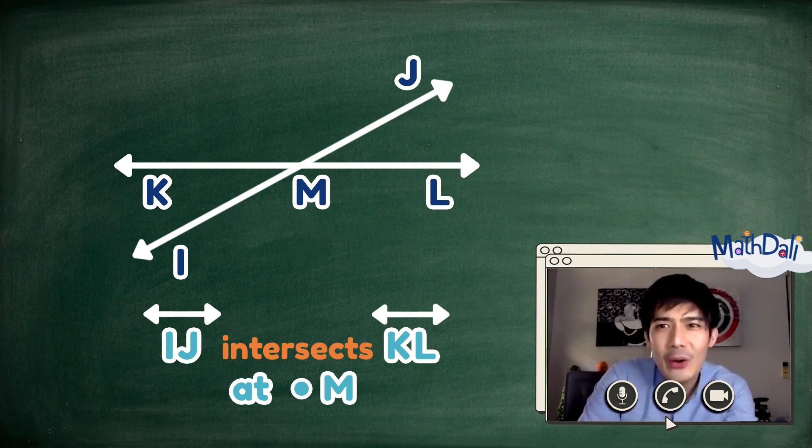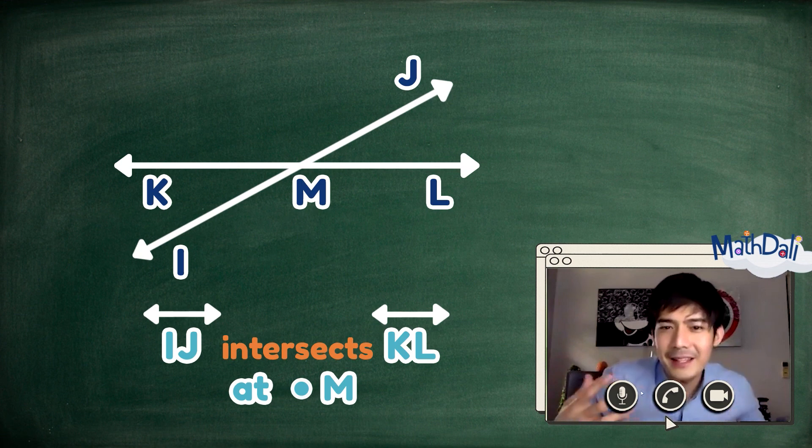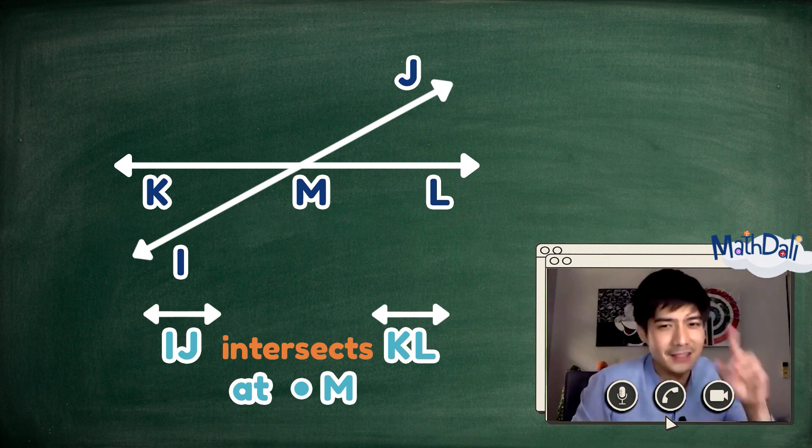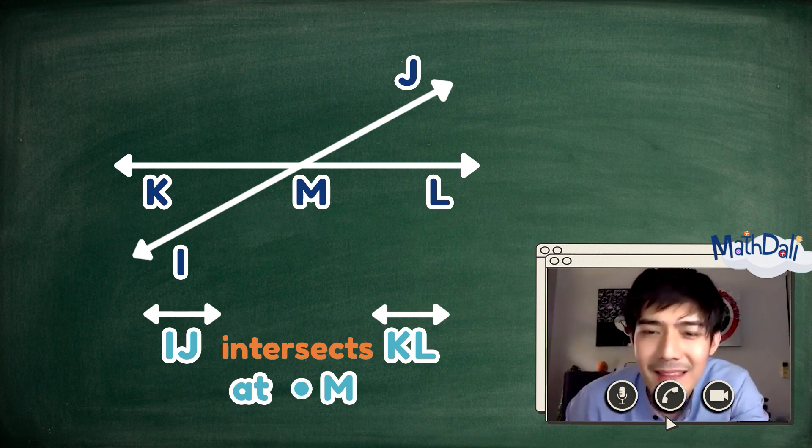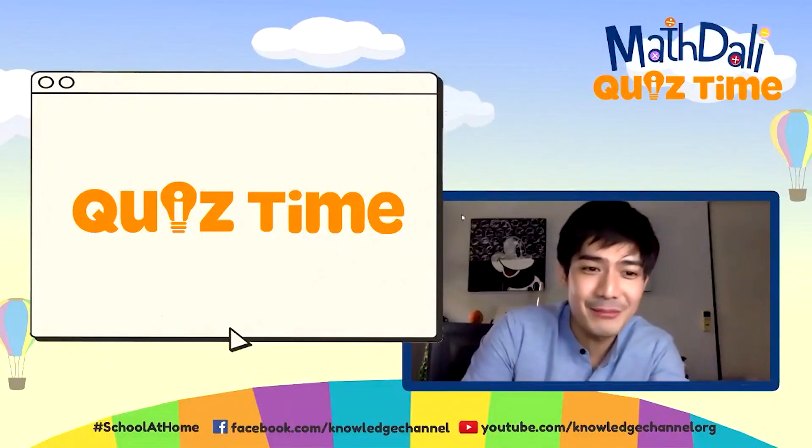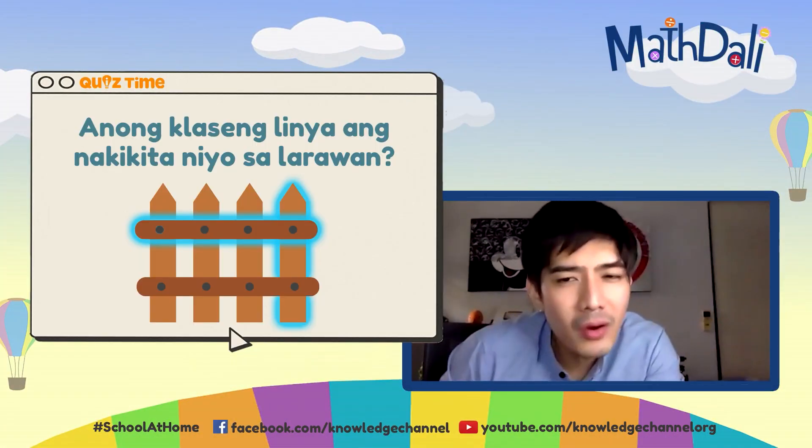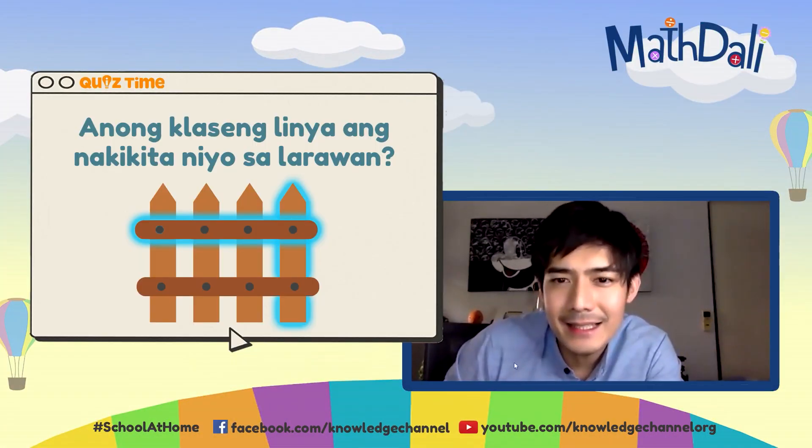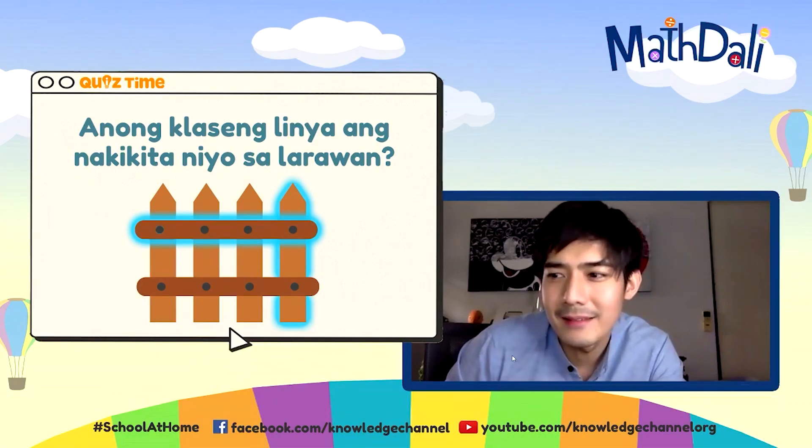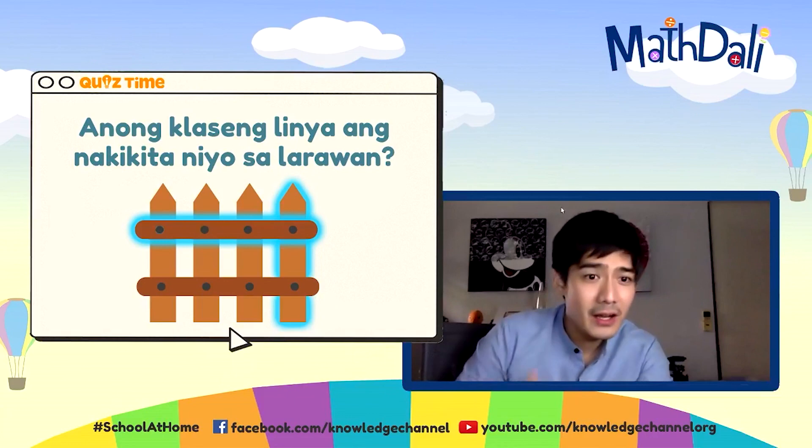Dahil gumagaling na kayo agad-agad sa pag-identify ng ugnayan ng mga linya, sige nga, let's put your skills to the test. It is Math Dali quiz time. Simulan na natin. Anong klaseng linya ang nakikita natin sa larawan?